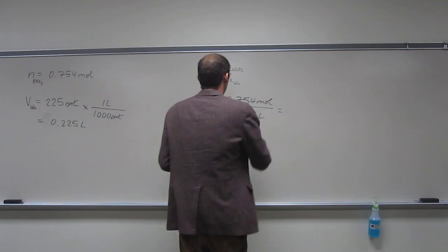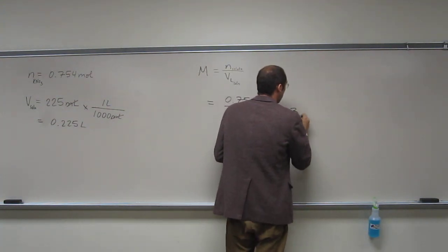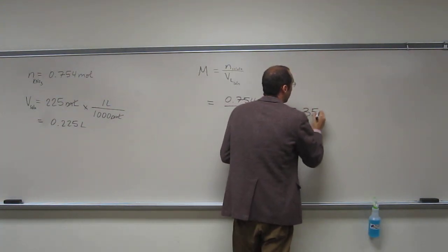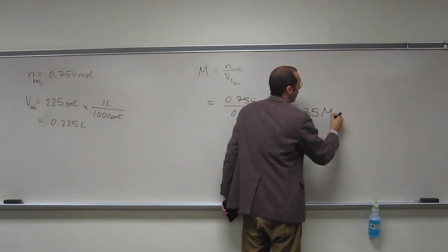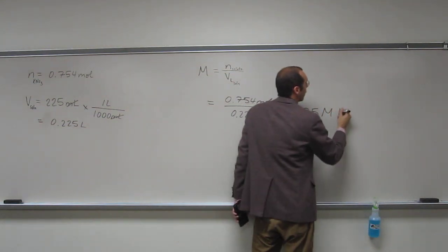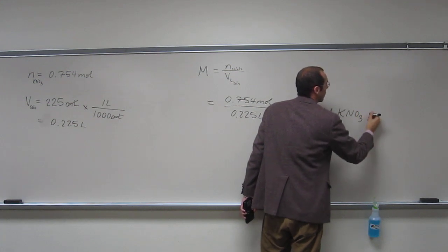So, to three significant figures, we've got 3.35, and what do we say, molar? 3.35 molar potassium nitrate solution.